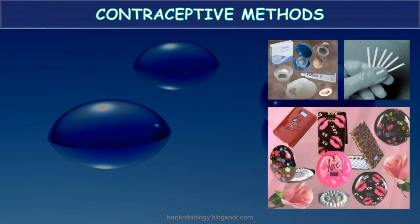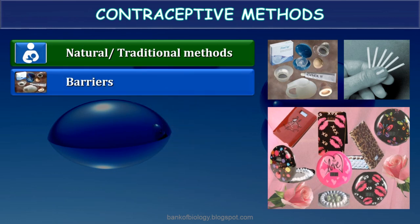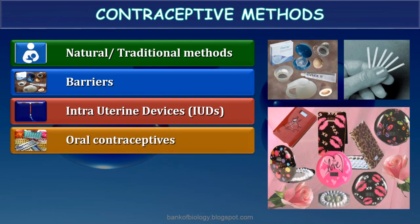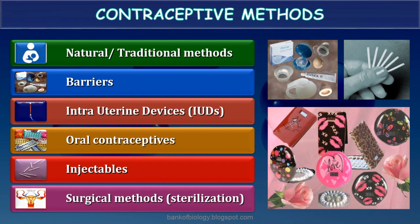Various contraceptive methods: 1st — natural or traditional methods; 2nd — barriers; 3rd — intra-uterine devices or IUDs; 4th — oral contraceptives; 5th — injectables; 6th — surgical methods or sterilization.